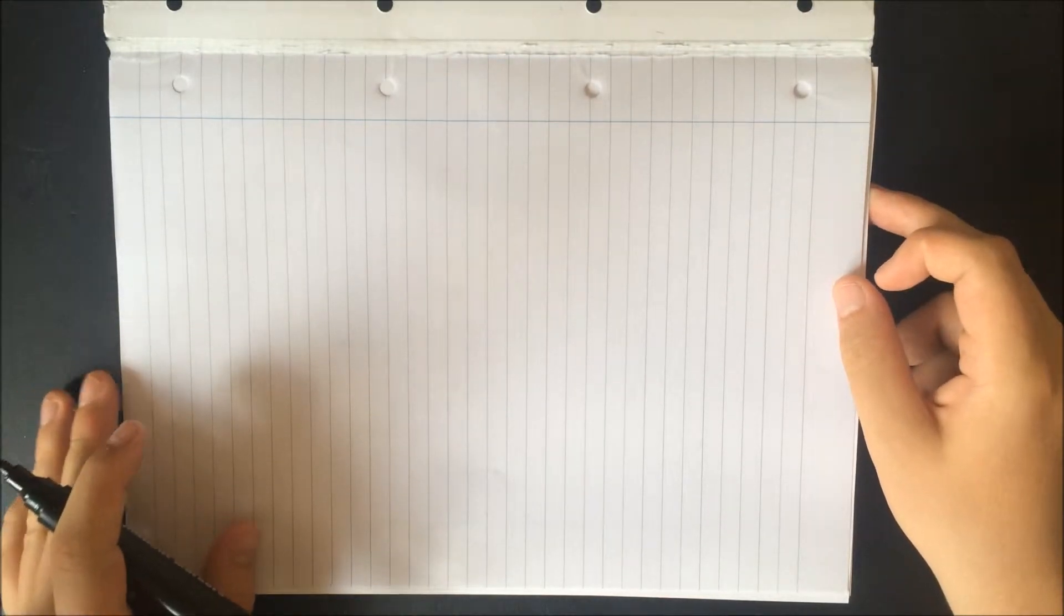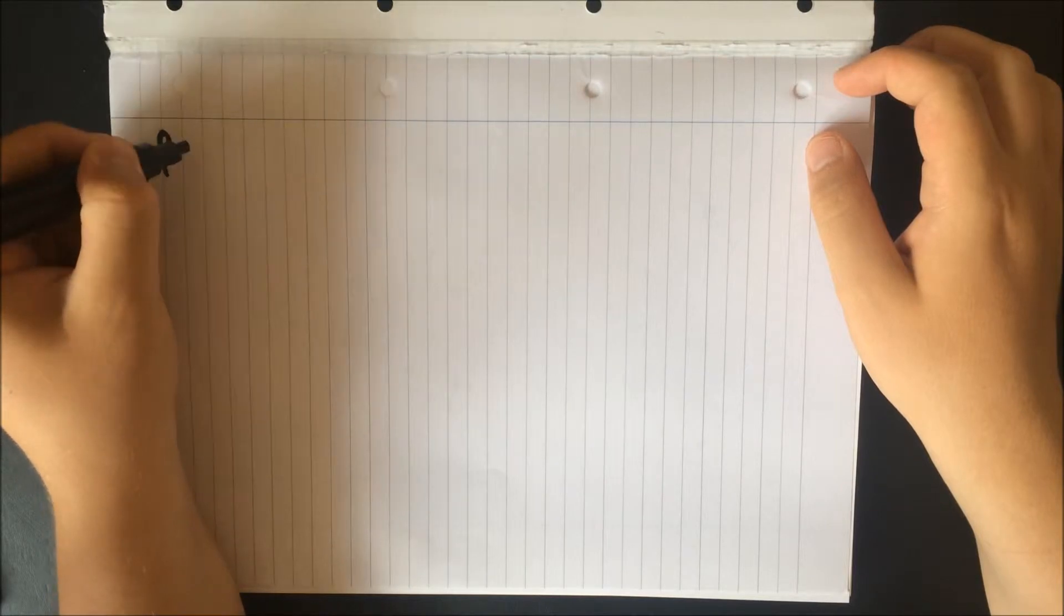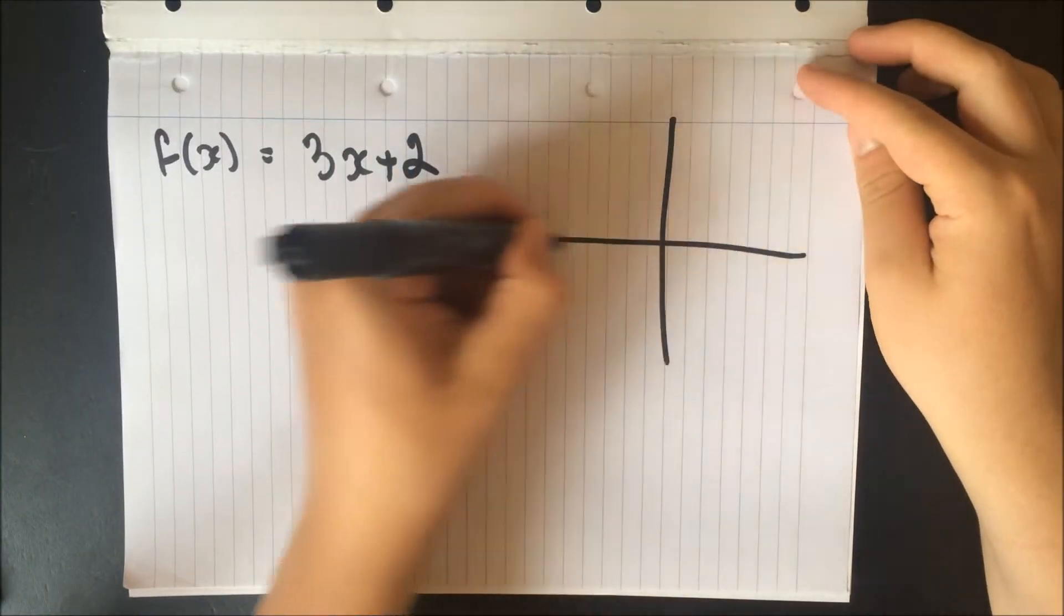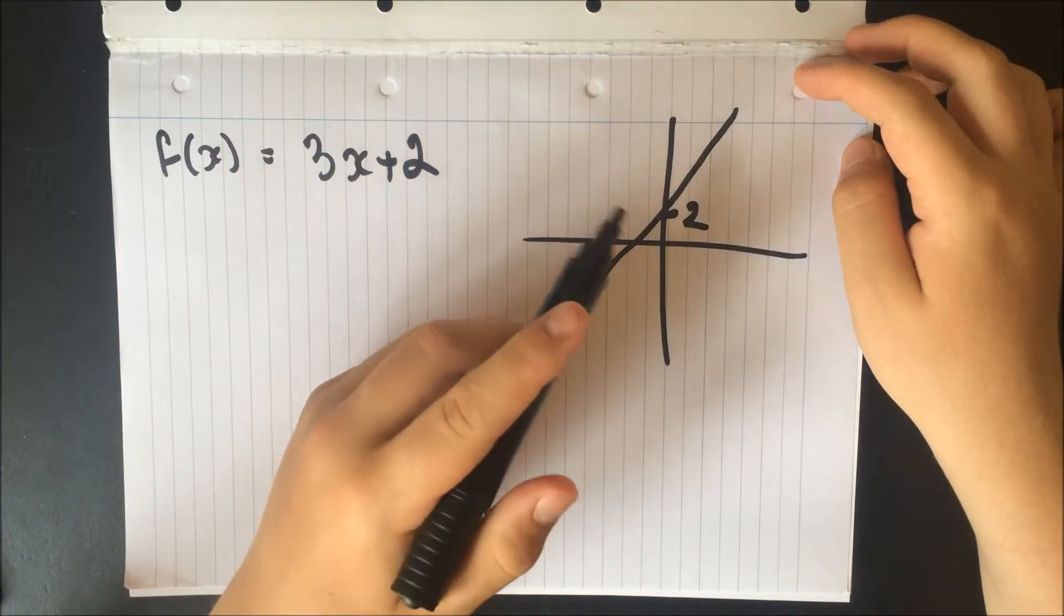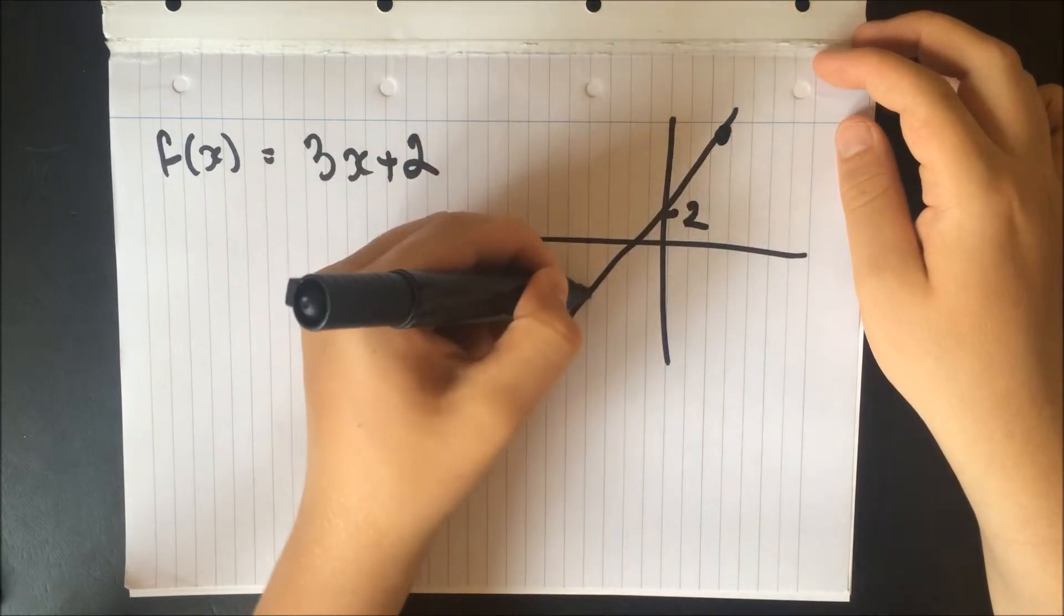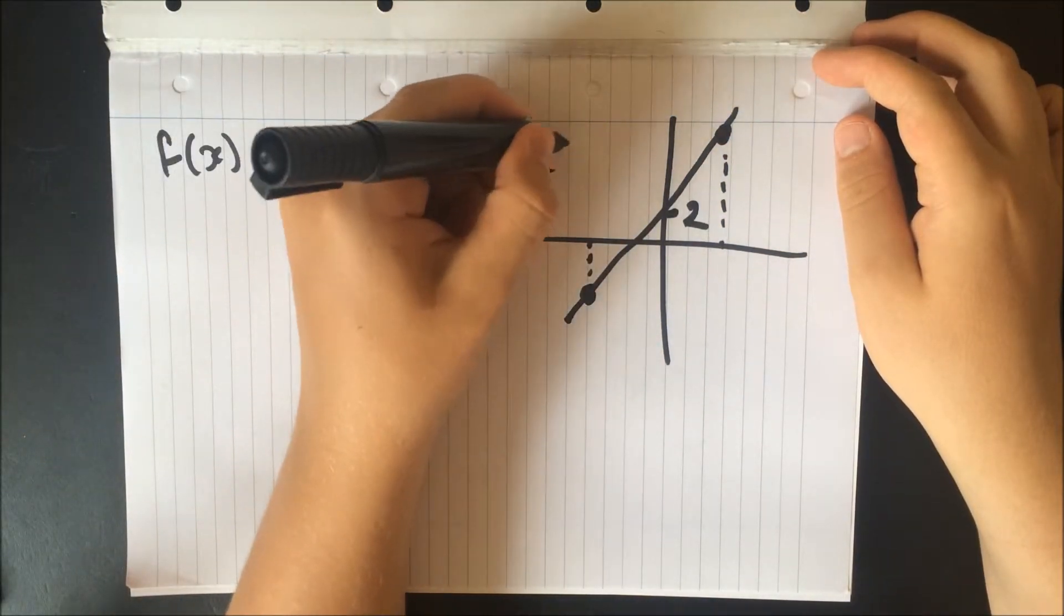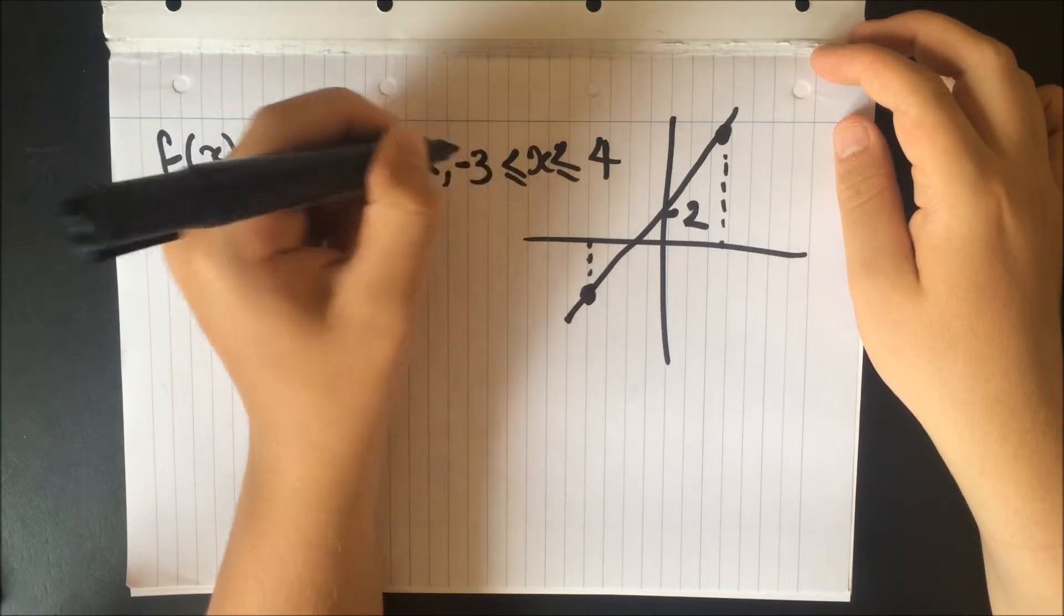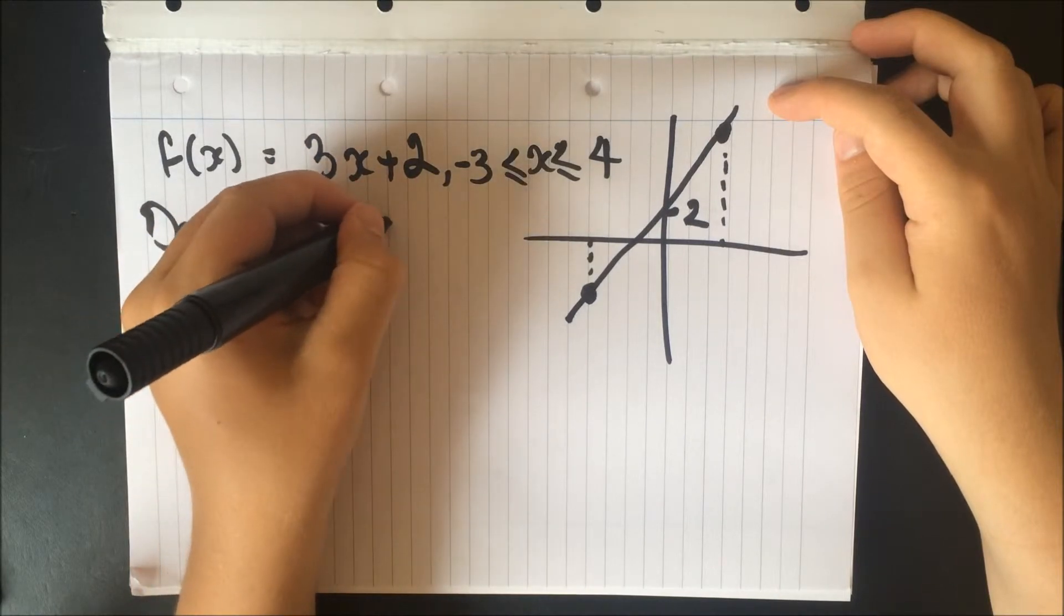So we can actually give intervals for the domain. So say if we had f(x) equals 3x + 2. We can see that that would be something like that, where this point is 2. And we can see that it'll go up continuously, go down continuously. However, we could actually restrict the domain. So it could only give certain x values. So we could say 3x minus 2, where x is between, so it needs to be less than or equal to 4, or more than or equal to minus 3. So we can restrict the domain.